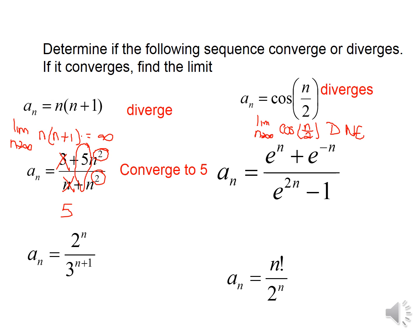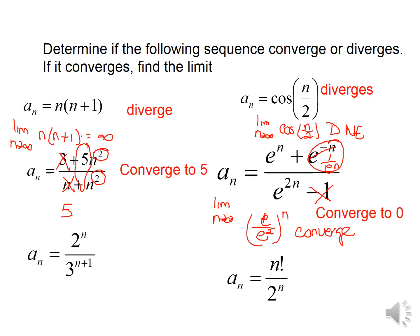For this one, remember that e to the negative n can be written as 1 over e to the n, so as n approaches infinity this term goes to zero. That term becomes negligible, and we're left looking at e^n over e^(2n), which can be written as (e/e²) raised to the nth power. Since e/e² is less than one, this is going to converge, and it converges to zero.